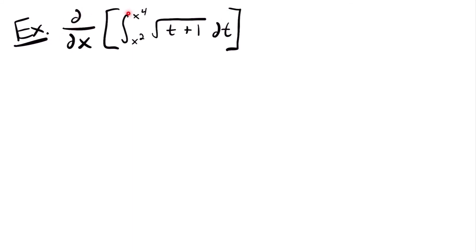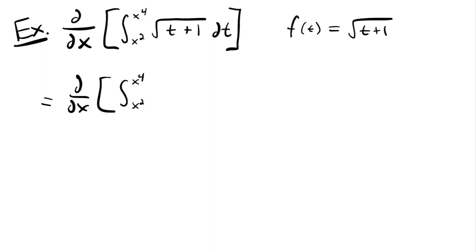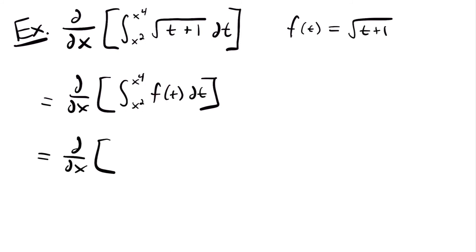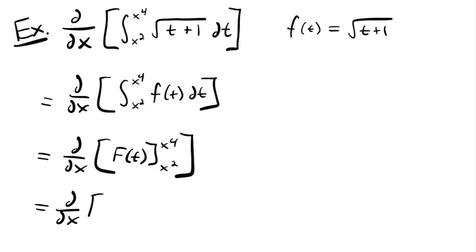Let's look at one final example. We have the derivative of the integral from x squared to x to the fourth power of the square root of t plus 1 dt. Let's set our function inside the integral equal to f of t, so f of t equals the square root of t plus 1. Rewriting: the derivative of the integral from x squared to x to the fourth power of f of t dt. Integrating, this equals the derivative of the antiderivative capital F of t evaluated from x squared to x to the fourth power.